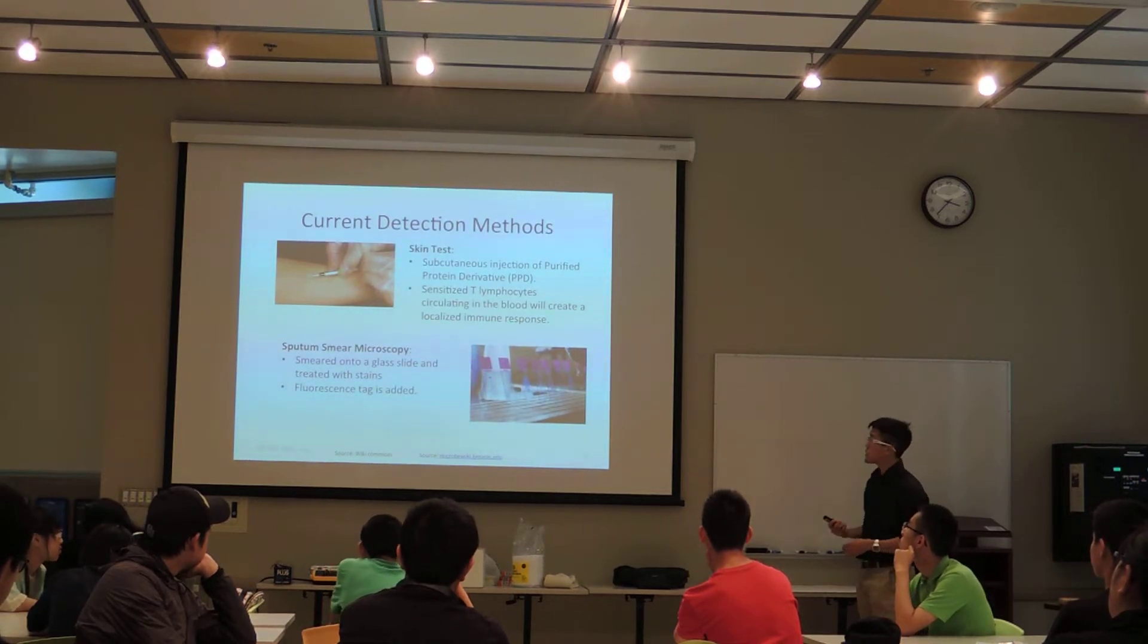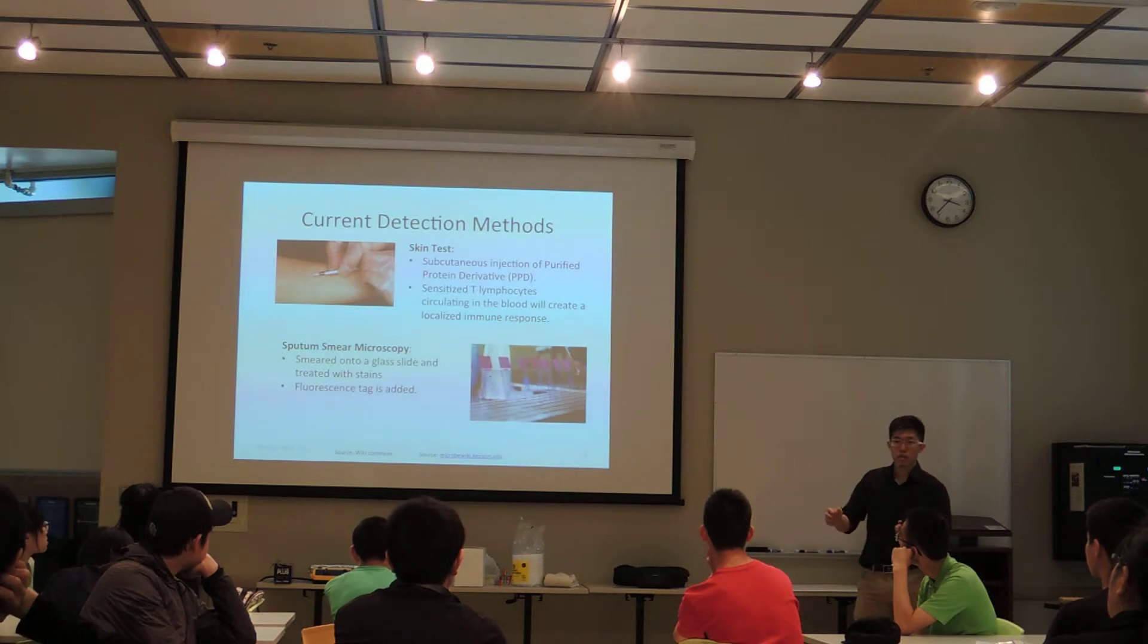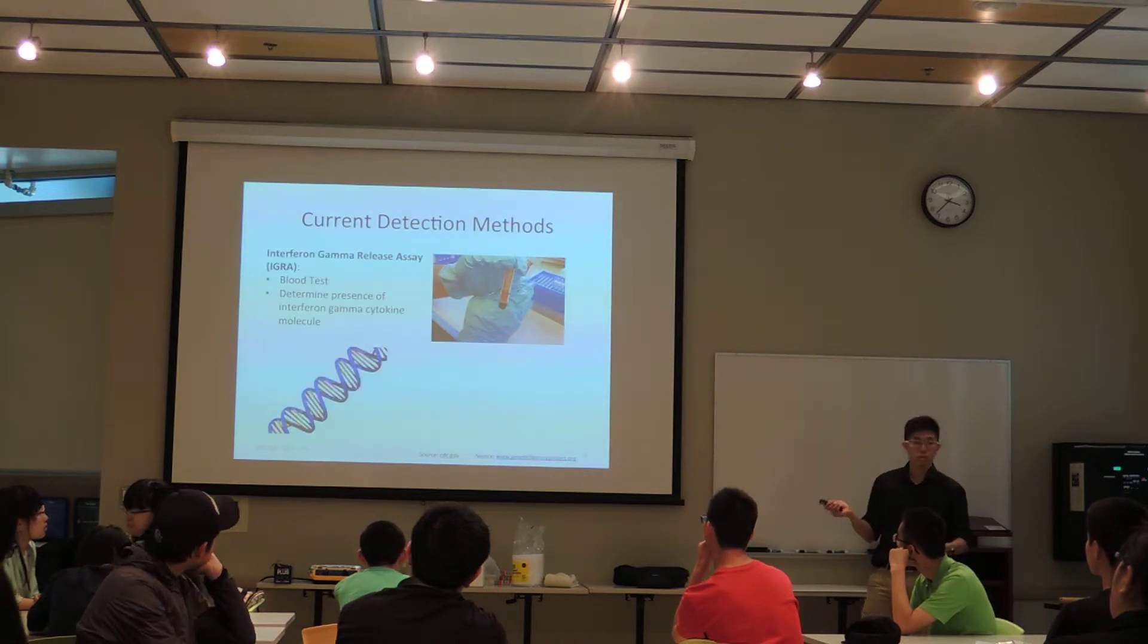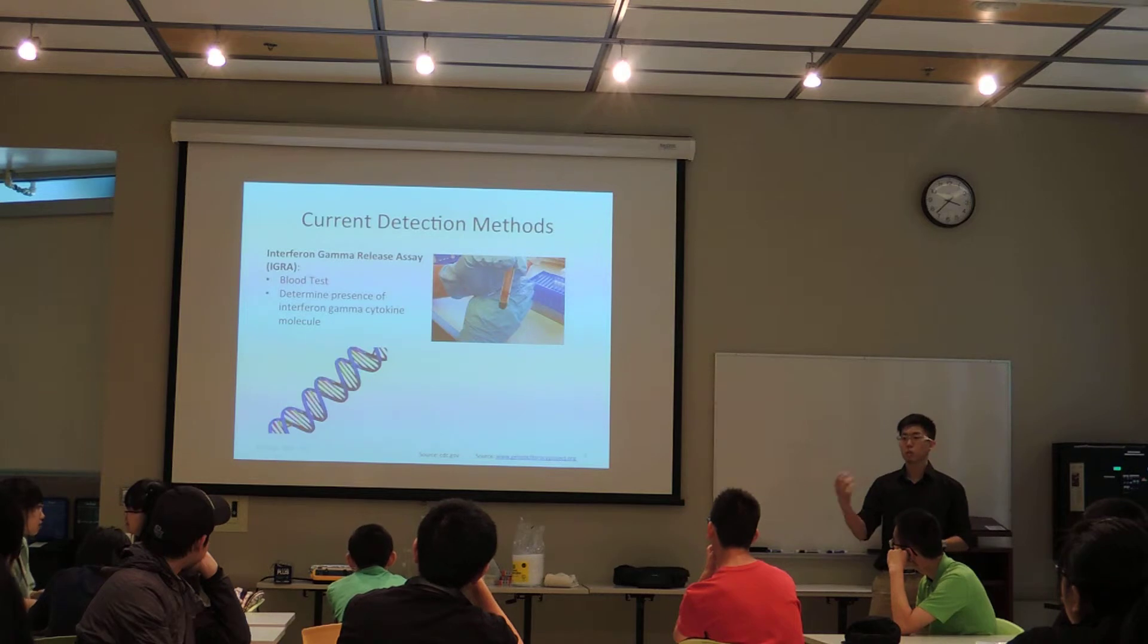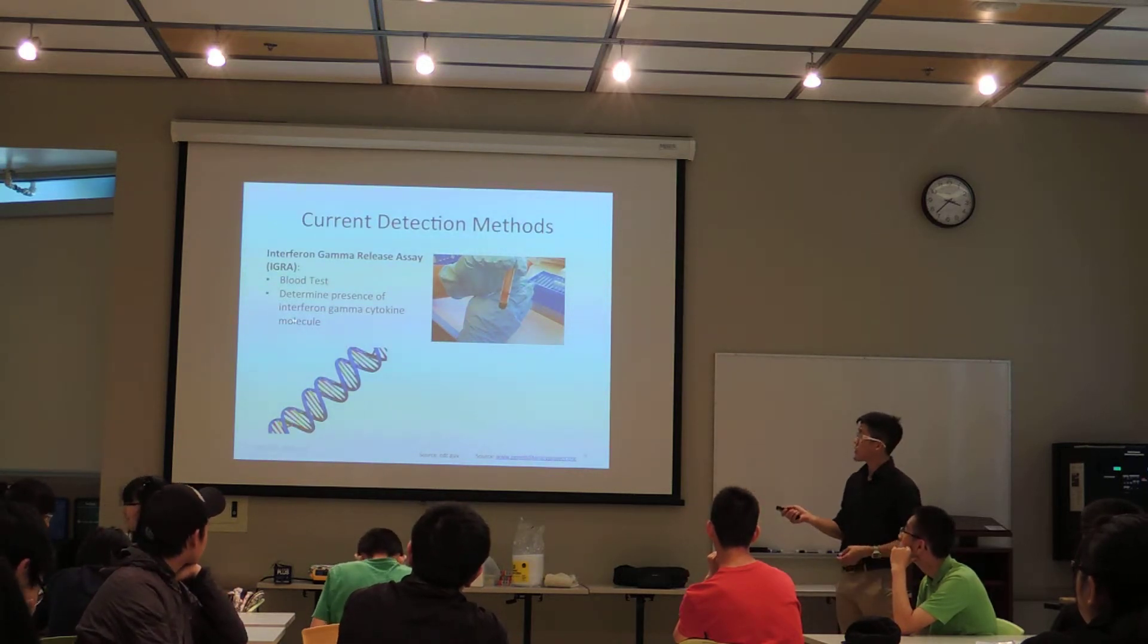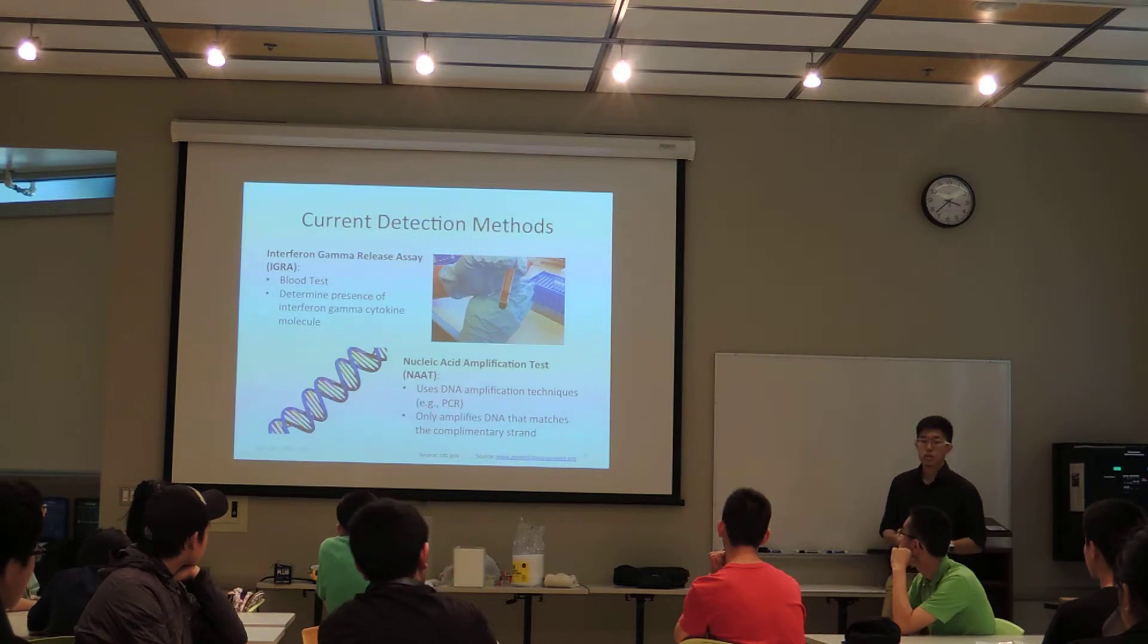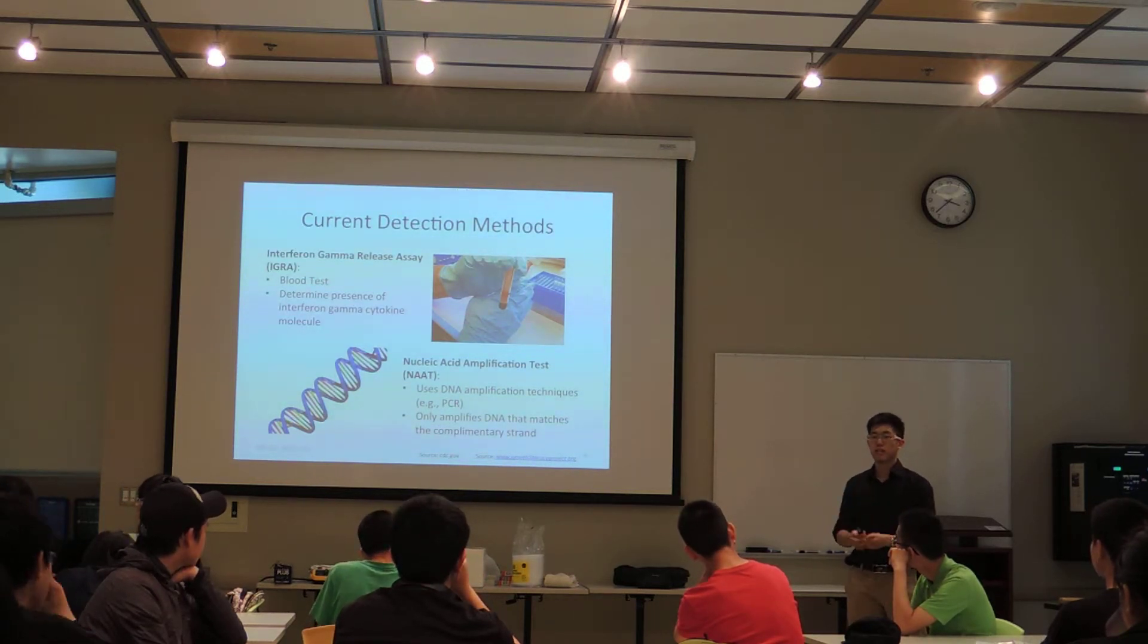Something else is we also use sputum smear microscopy. That's where we take a person's sputum, which is mucus that comes from the lungs, and we put it on a microscope slide, and we stain it with some fluorescent stuff, and we look under a microscope to see if it emits light. If it does, then you're considered to have tuberculosis. Something else is we use blood tests. In blood tests, we're specifically looking for something called interferon gamma cytokine. Cytokines are messenger molecules - they tell the macrophages and immune cells, hey, we've got something here that's not good for our body, come and attack. So we're looking for this specific one called interferon gamma, which indicates that you have tuberculosis. But what I'm interested in, what my group is interested in, is using and manipulating nucleic acid amplification tests, where we use DNA, tuberculosis DNA, and we determine whether or not someone has tuberculosis by looking to see if they have that tuberculosis DNA inside their bodies.